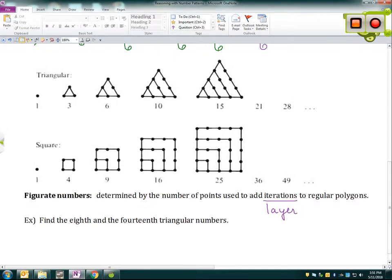So the first two sets of figurate numbers are triangular numbers. And as you can see, we have a one, and then three dots makes a triangle, and then when we add another row, we get six, and then we're adding a row of four to get ten. And then the square numbers, we start with one, and then we need to add these three to get four, and now we need five more to get nine, and then, again, adding layers all the way around, we get 16.